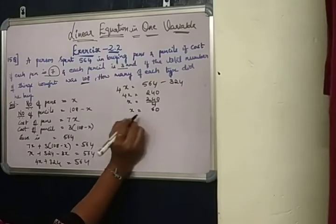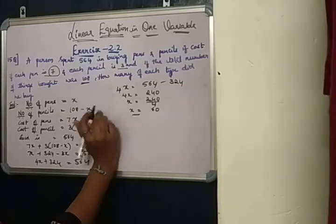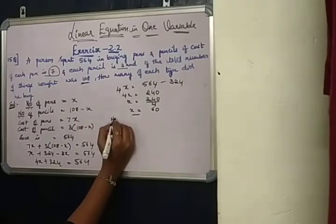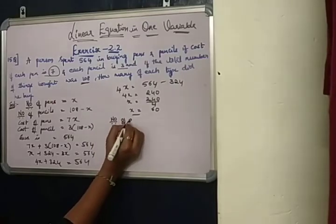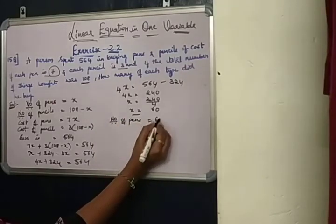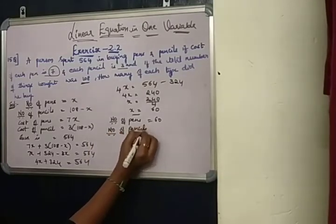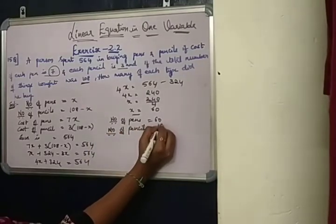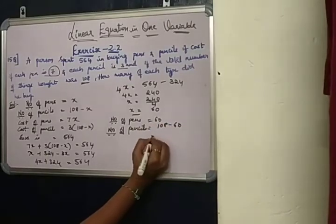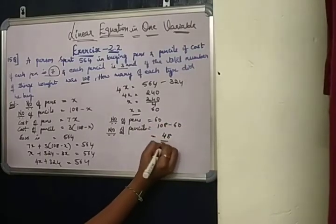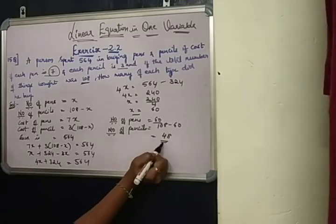x equals 60. x means pens, therefore the number of pens is equal to 60. And the number of pencils is equal to 108 minus 60, your answer is 48.